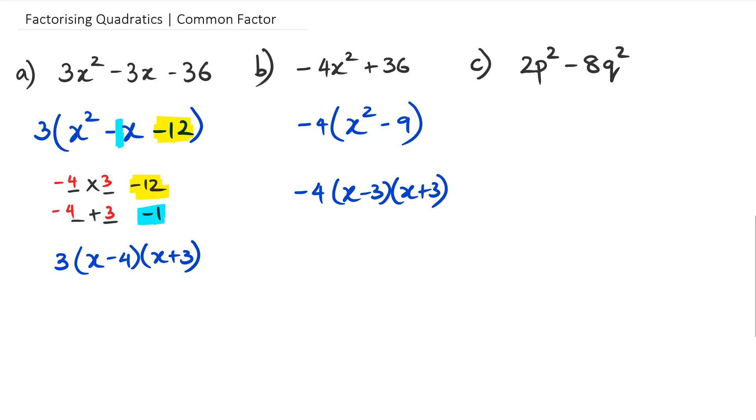Hopefully you're with me so far. And now moving on to question C. So with question C, what we have is we've got two variables, which is the P and the Q. They're both perfect squares. We also have the 2 and 8 that we need to consider. Now looking at the 2 and 8, we know the common factor is 2. So we can bring 2 out of this equation.